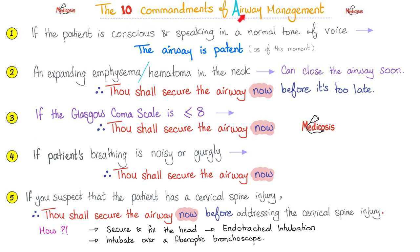Here are the ten commandments of airway management — good for surgery, emergency medicine, and anesthesia. Rule number one: if the patient is conscious and speaking in a normal tone of voice, the airway is open as of this moment. This can change in the next second. If you have an expanding emphysema or hematoma, it's getting bigger and can close the airway in the next minute. Thou shall secure the airway now before it's too late.